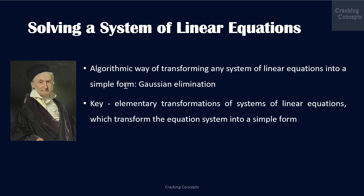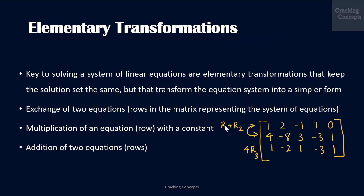There exists an algorithmic way of transforming any system of linear equations into a simple form, which is called Gaussian elimination. The key to Gaussian elimination are the elementary transformations of systems of linear equations, which transform the equation into its simple form. These elementary transformations keep the solution set the same but transform the equation into a simpler form.